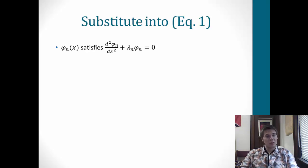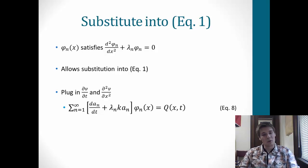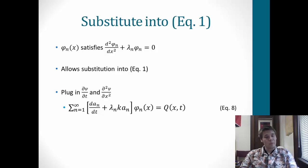We substitute into equation 1, which we're allowed to do because φ_n(x) satisfies d²φ_n/dx² + λ_n·φ_n = 0. Plugging in those equations, we get equation 8: the summation from n=1 to infinity of (da_n/dt + λ_n·k·a_n)·φ_n(x) equals the function q(x,t). This comes from combining the expressions for ∂v/∂t and ∂²v/∂x².